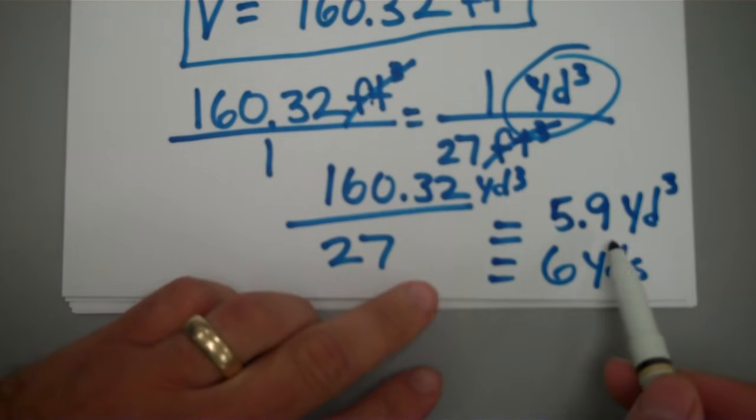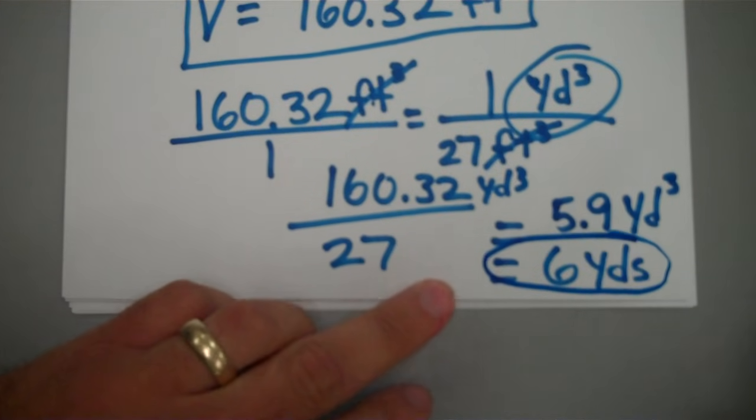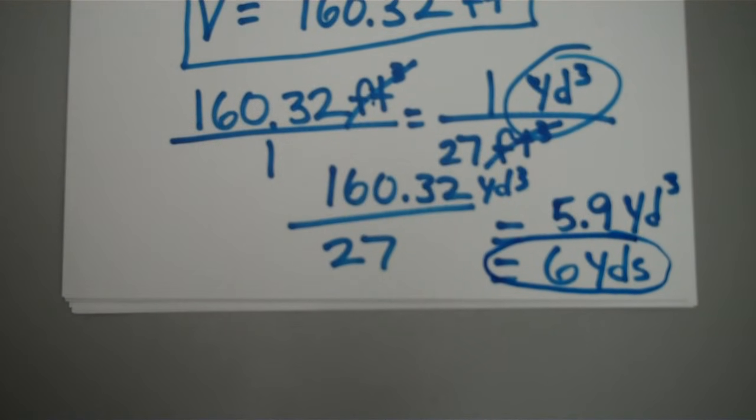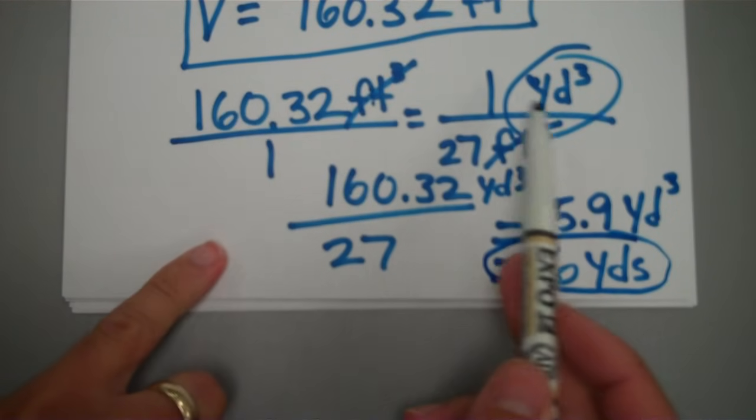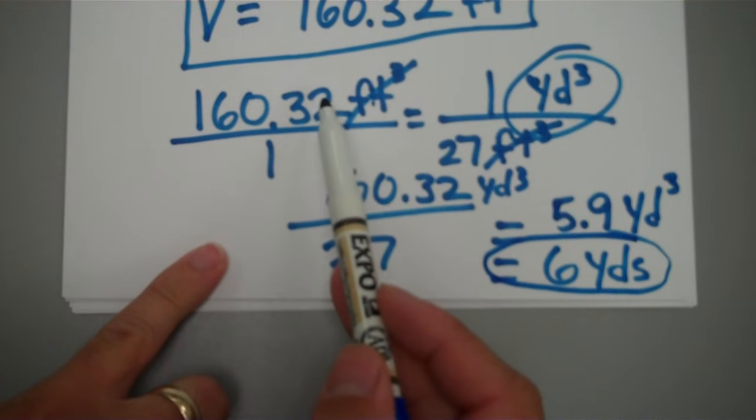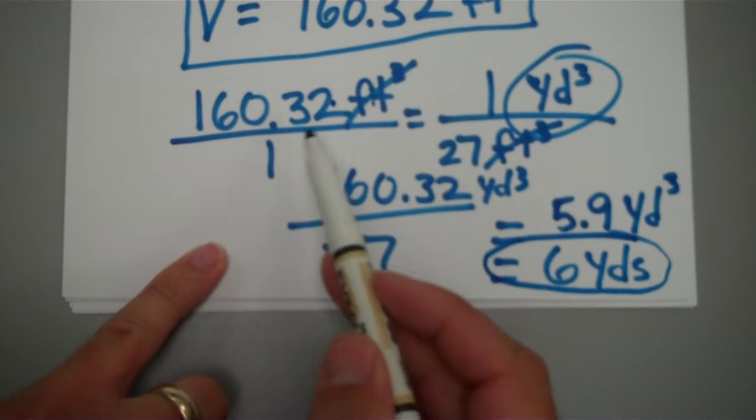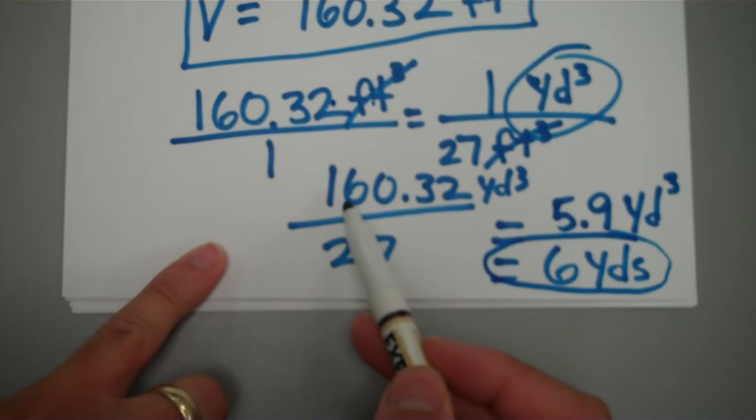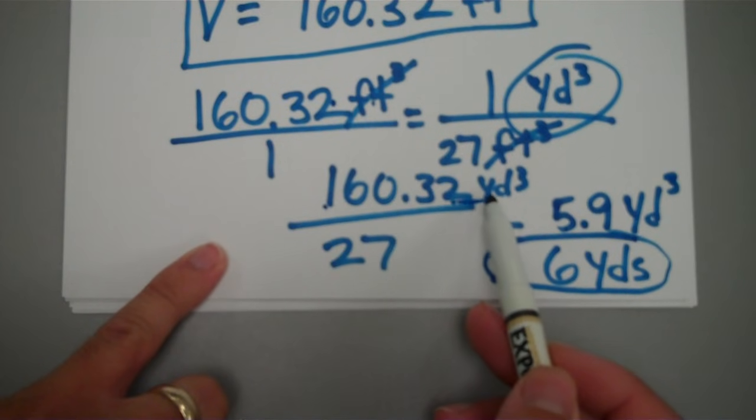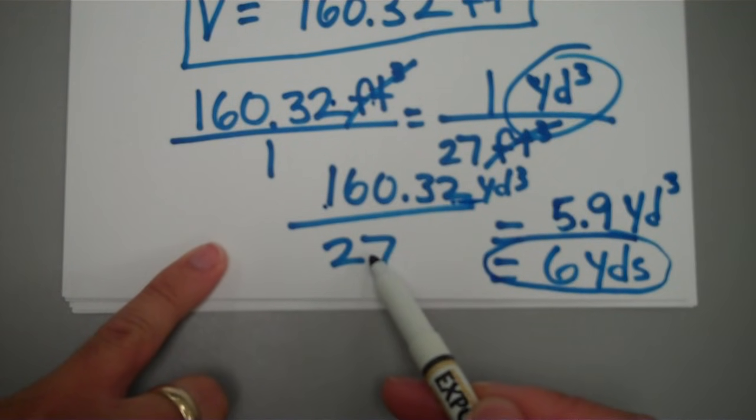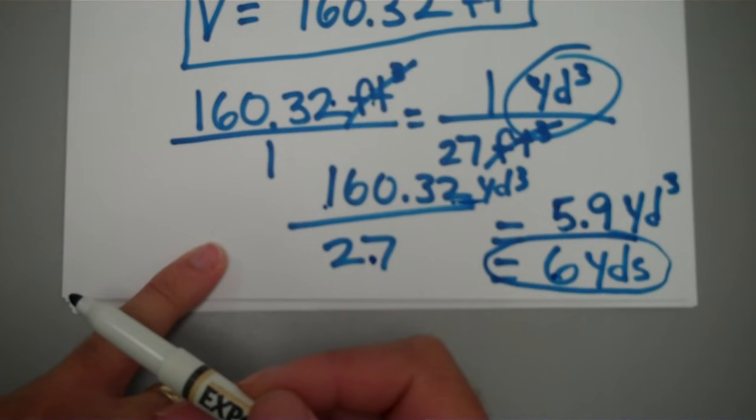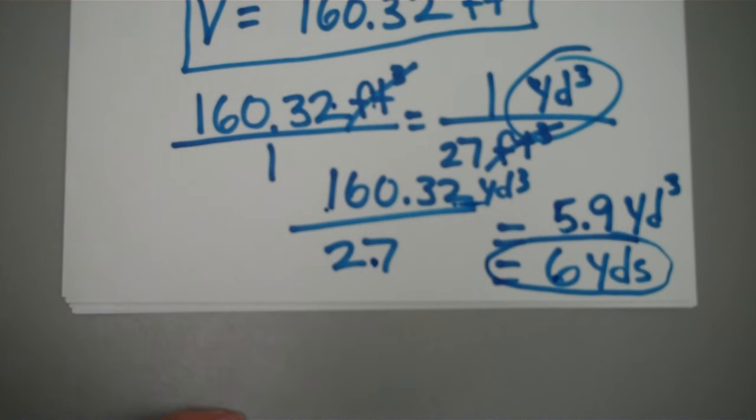And that's basically how it happens. This would take six yards and typically, depends on the type of concrete you get, most times it's about around $100 a cubic yard. So you're looking at about $600 to fill this pad here. Again, I just showed you going from cubic feet to cubic yards. This is just a technical way of doing it, but in all reality all you have to do is take 160.32 cubic feet and divide it by 27 and you'll get your number. Try out your practice problem.